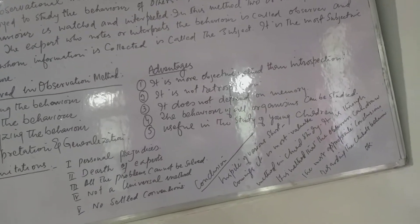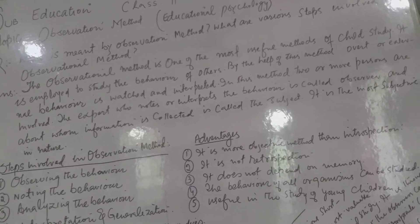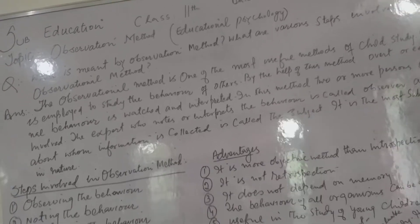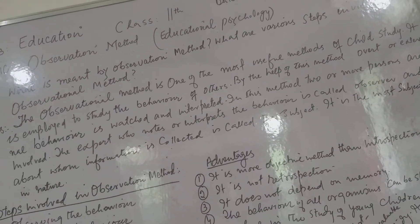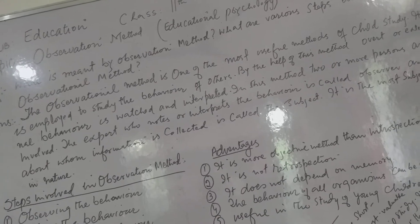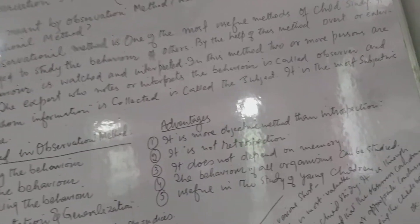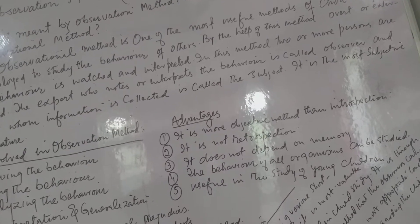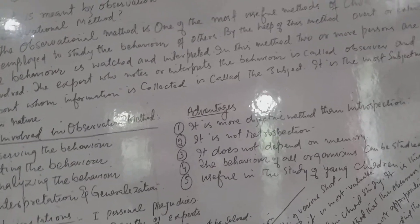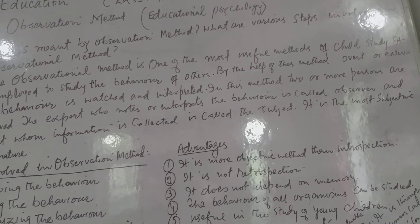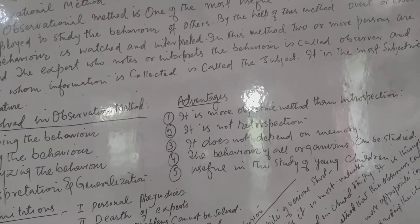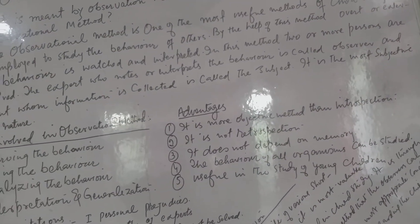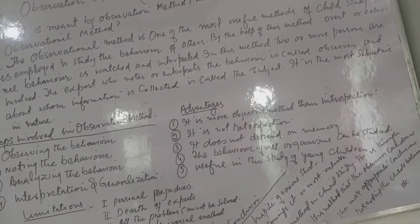What is meant by observation method? The observational method is one of the most useful methods of child study. It is applied to study the behavior of others. By the help of this method, overt or external behavior is watched and interpreted. In this method, two or more persons are involved. The expert who notes or interprets the behavior is called the observer, and the one about whom the information is collected is called the subject. The observer tries to observe the subject. It is most objective in nature as it does not depend on the past history of the individual or on the data collected by someone else.